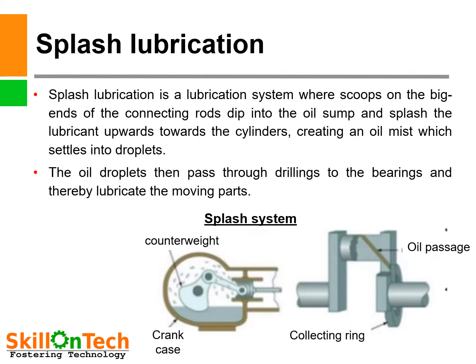There are two types of lubrication: splash lubrication and force lubrication. In splash lubrication, scoops on the big ends of the connecting rods dip into the oil sump and splash lubricant upward towards the cylinder, creating an oil mist which settles into droplets. These oil droplets pass through drillings to the bearings to lubricate the moving parts. The crankshaft counterweight dips into the oil and splashes it to lubricate the bearings.